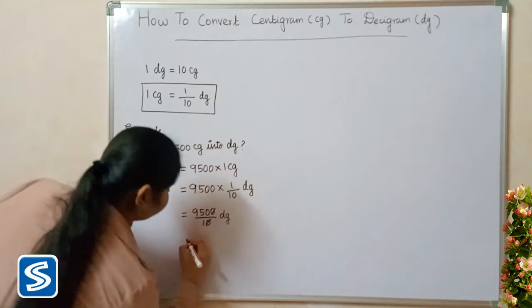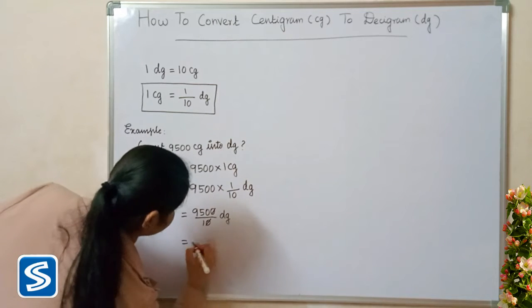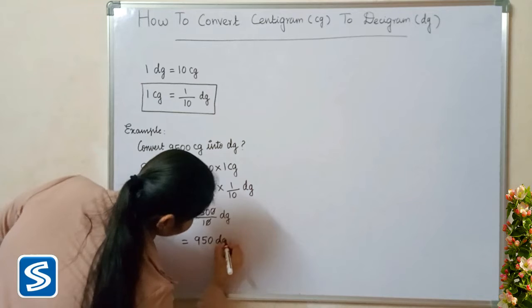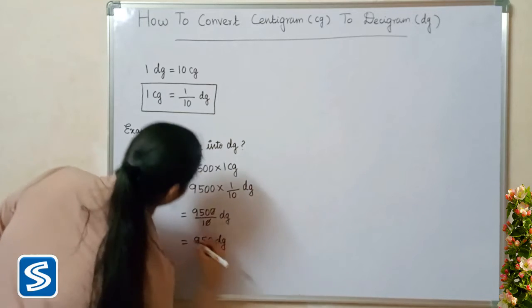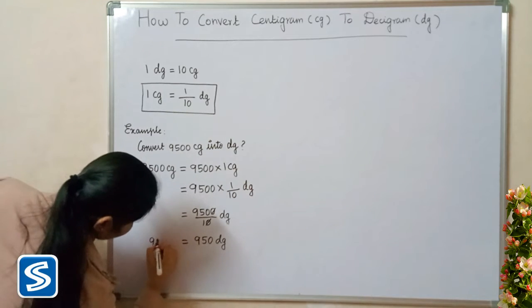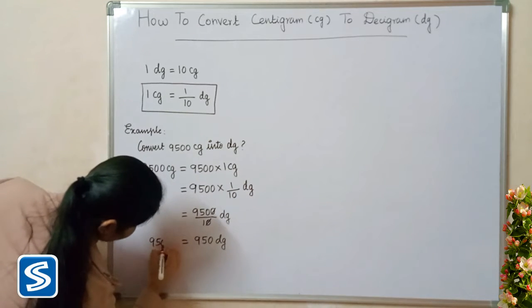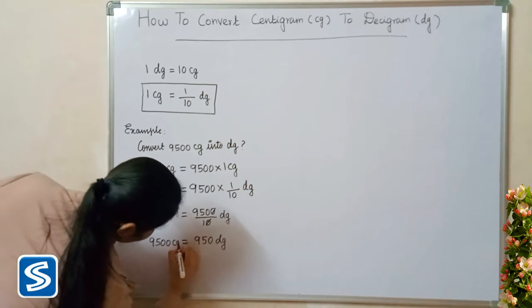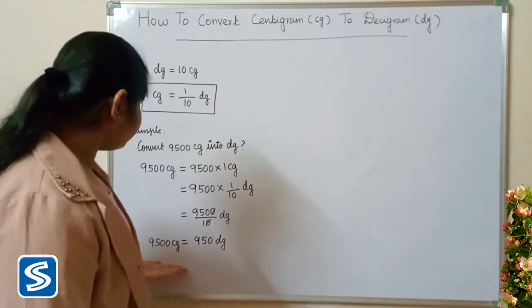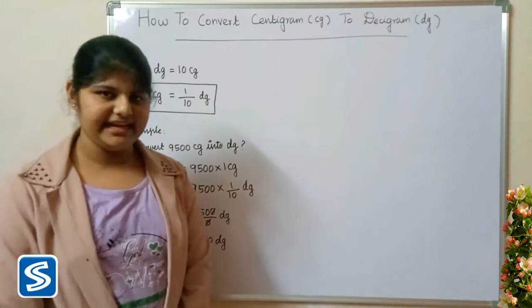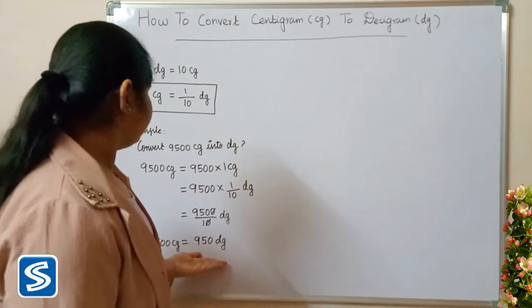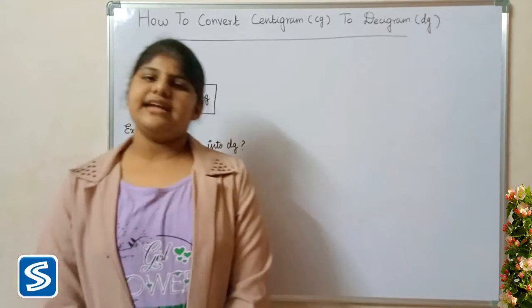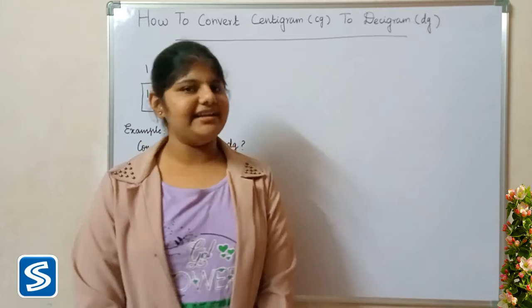Here 0 and 0 get cancelled. So when we divide 9500 by 10, our answer will be 950 decigrams. So 9500 centigrams is equal to 950 decigrams. Next we will take another example.